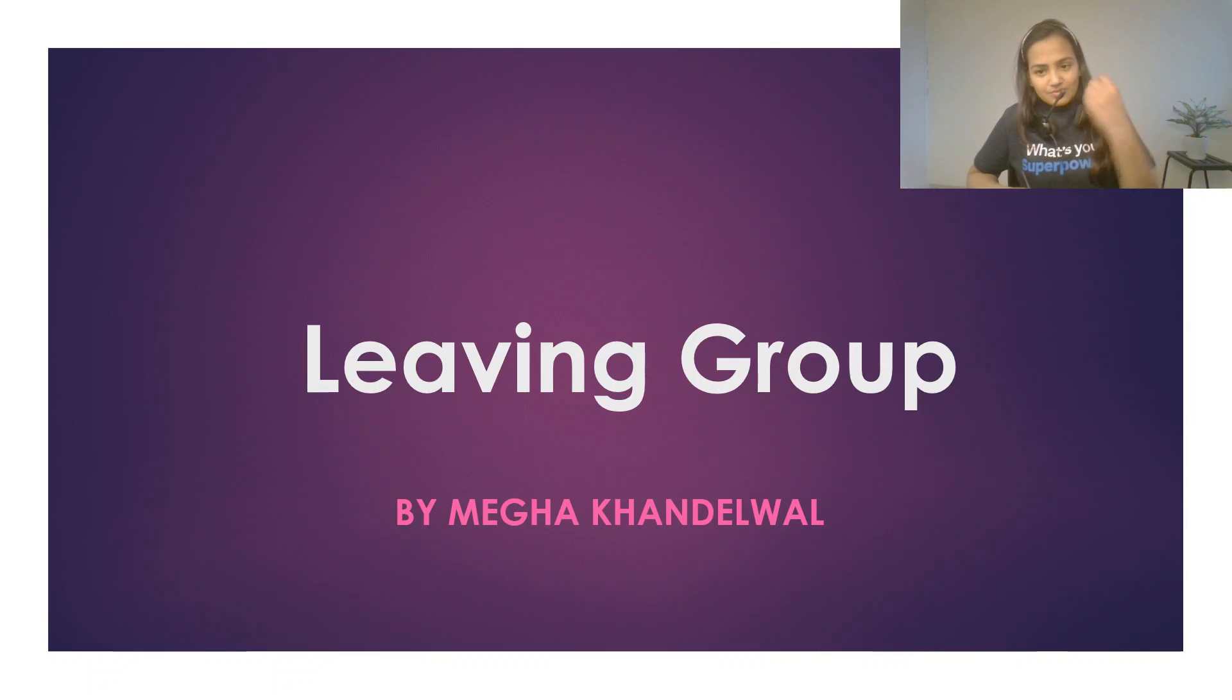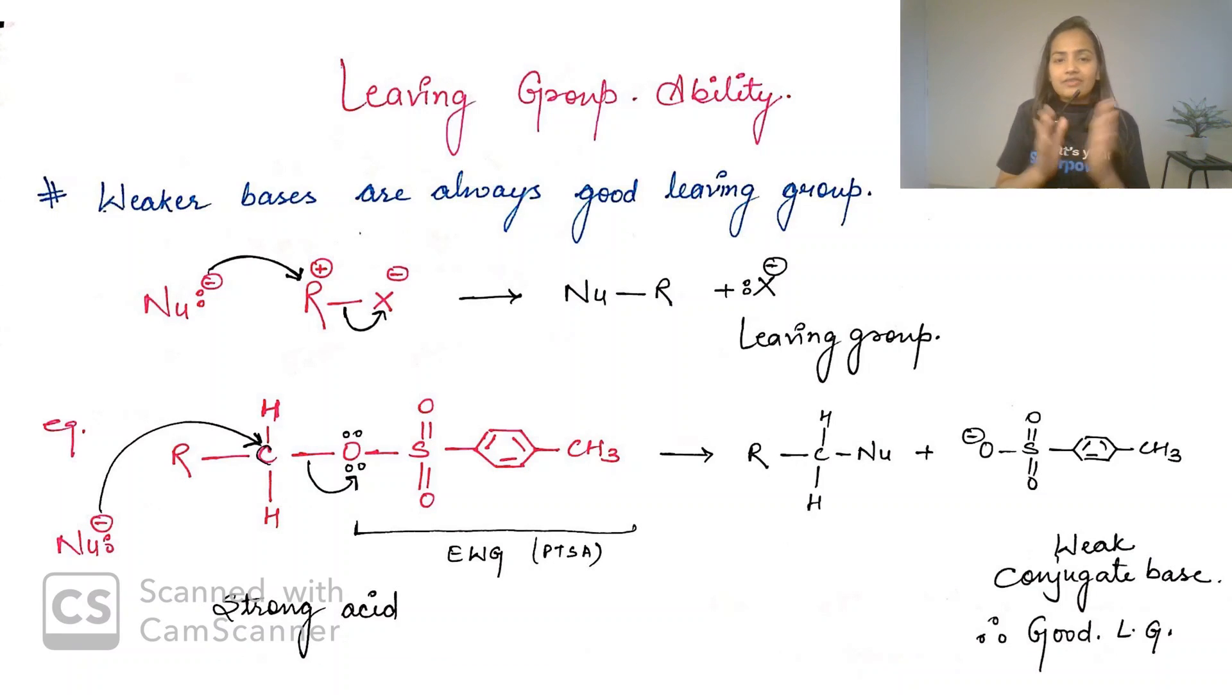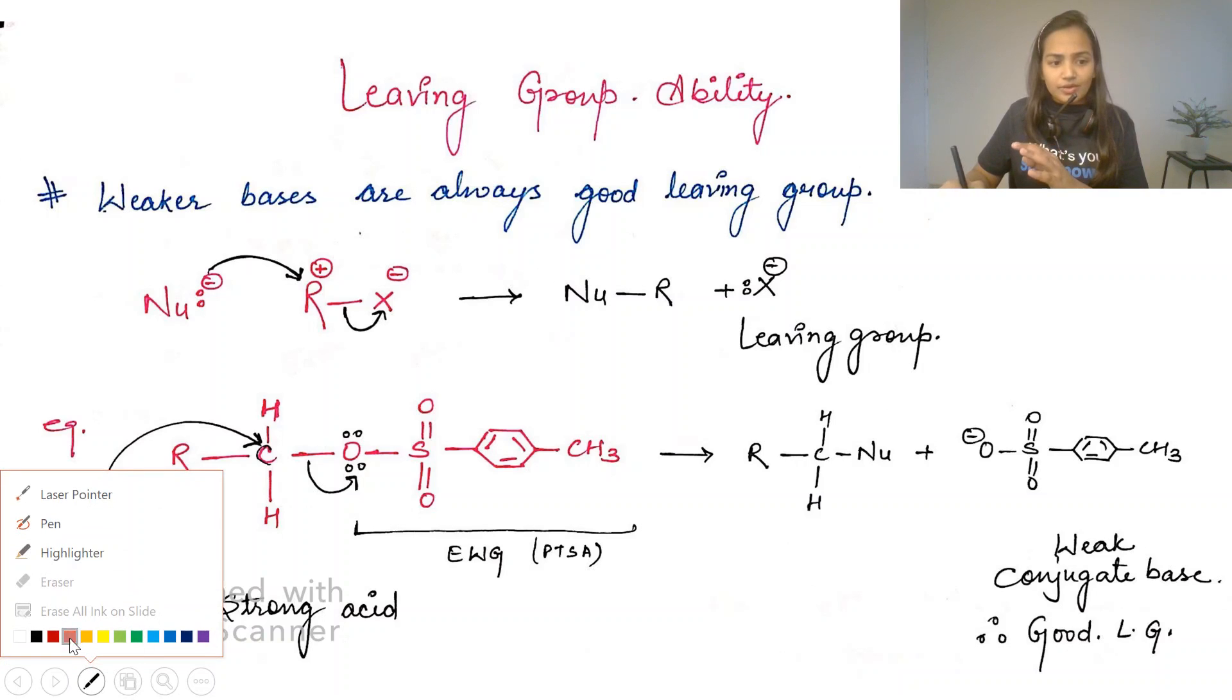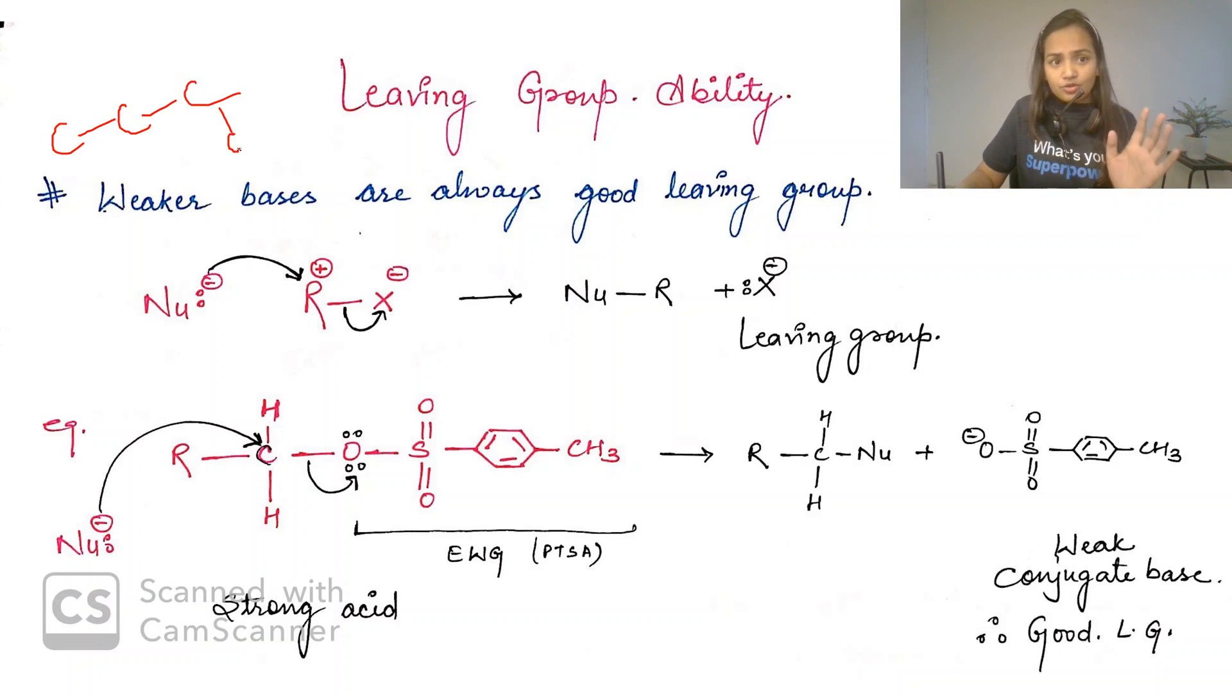Leaving group ability means a kind of group which has leave ability. Which group will have leave ability? Of course, that certain group which will be weakly bonded. If I take any molecule, there may be G1 group or G2 group. Which is the leaving group? The group which is weakly bonded.